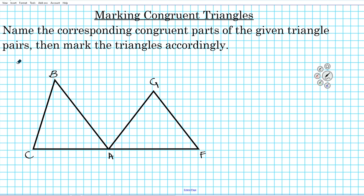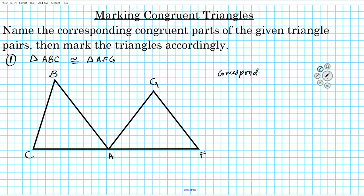The instructions are for us to name the corresponding congruent parts of the given triangle pairs, then mark the triangles accordingly. For question number one, let's say we have the congruency statement that triangle ABC is congruent to triangle AFG. We're going to first state the corresponding congruent sides and then do the angles after that.